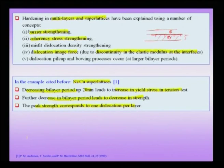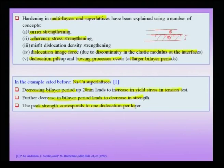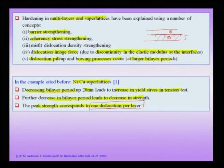Additionally, common mechanisms observed in large grain size materials — such as dislocation pile-up and bowing of dislocations like the Orowan bowing — are also observed, but only at larger bilayer periods. At smaller bilayer periods, there is not enough space for mechanisms like Frank-Reed or Orowan bowing to operate. At really small periodicity, the whole region can only support one dislocation per layer, so multiple dislocations in the thickness direction are not possible.